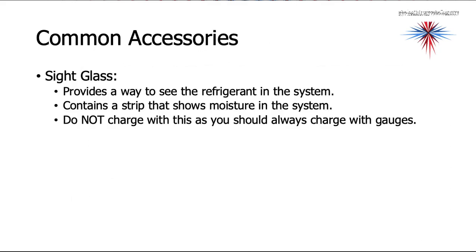A few common accessories always come up when talking about subcooling. A sight glass is sometimes added to the liquid line to see that refrigerant is in the system and contains a strip that shows moisture. Do not charge using the sight glass — always charge with gauges. With newer refrigerants, bubbles in the sight glass do not indicate charge status.